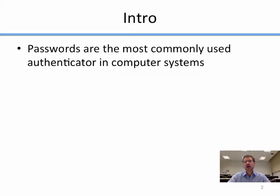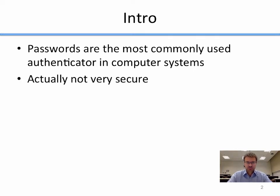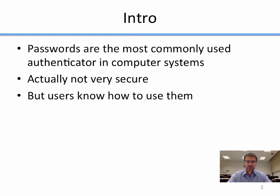Passwords are the most commonly used authenticator in computer systems. Everybody who uses computers has a password — at least one — that they use for stuff. You probably have more than one because you have dozens of accounts that all require passwords. Interestingly, passwords are actually not very secure and not very good at authenticating people. But the big advantage is that users have been trained to use them, so they become the default authentication mechanism for any new system, since you just assume that users know how to use them.